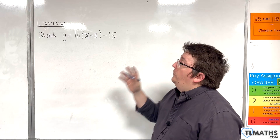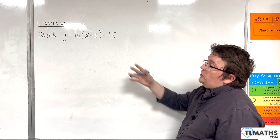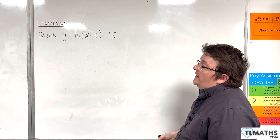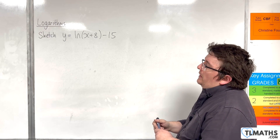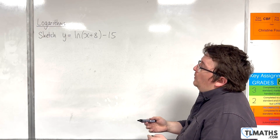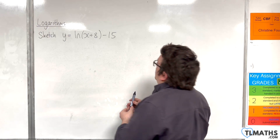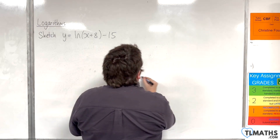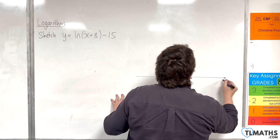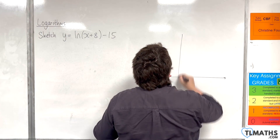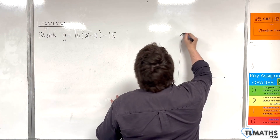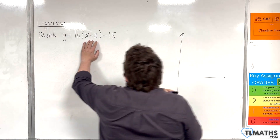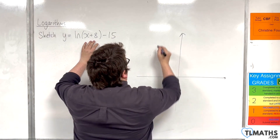In this video, I want to look at sketching y equals the natural log of x plus 8, take away 15. First of all, where is the vertical asymptote? That will be when x is minus 8.